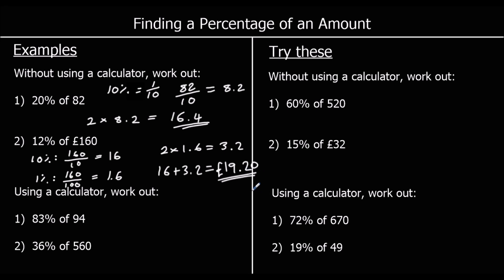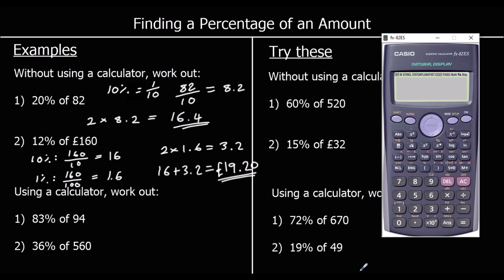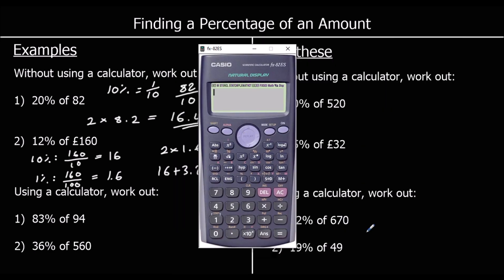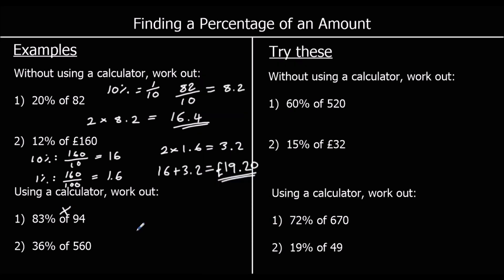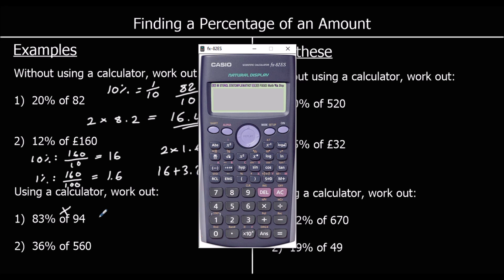Using a calculator: work out eighty-three percent of ninety-four. We can either use the percentage button or change it to a decimal or fraction. Using the percentage button: type eighty-three, then the percent button, times ninety-four. Eighty-three percent of ninety-four is seventy-eight point zero two.